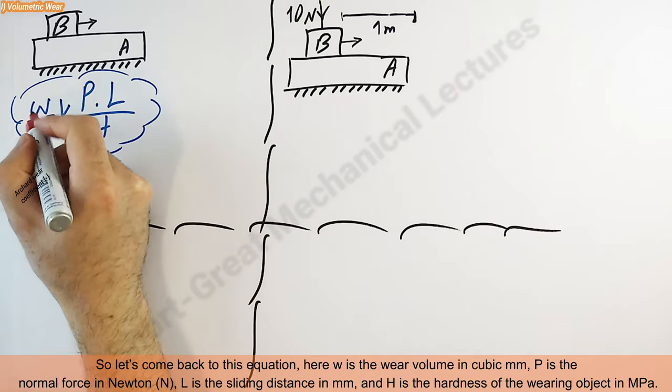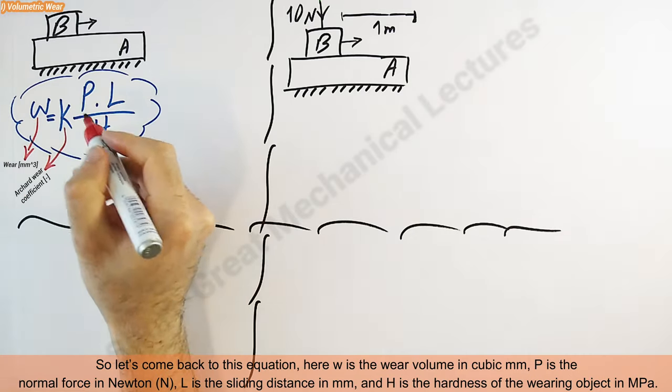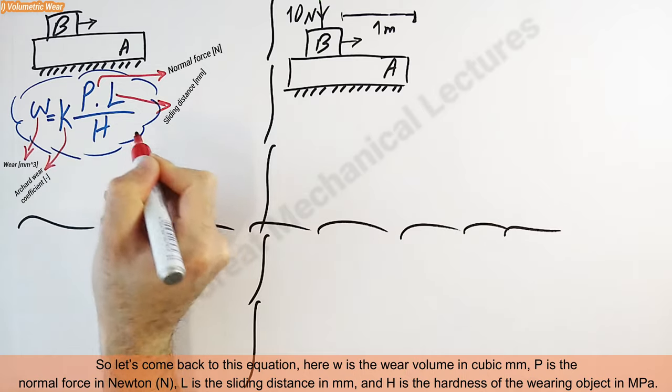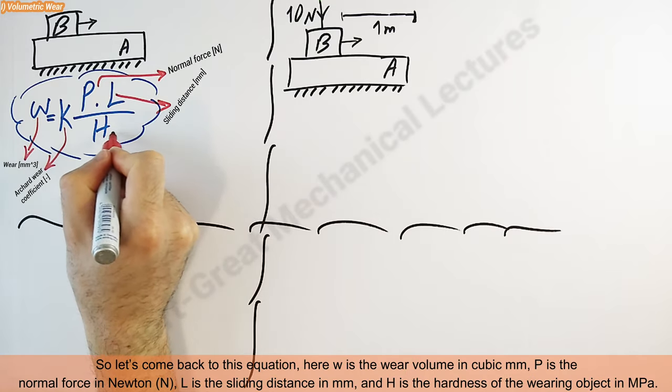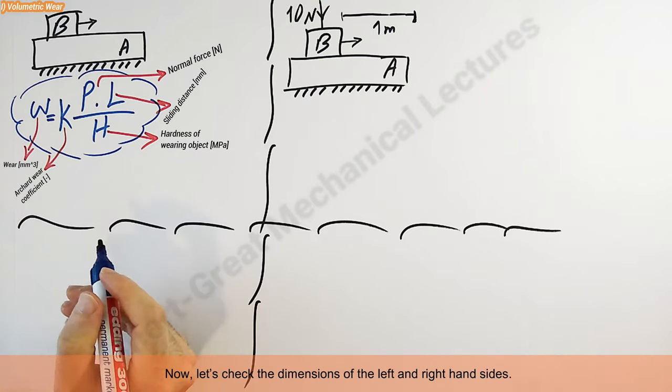Let's come back to this equation. Here W is the wear volume in cubic millimeter, P is the normal force in Newton, L is the sliding distance in millimeter, and H is the hardness of the wearing object in megapascal.